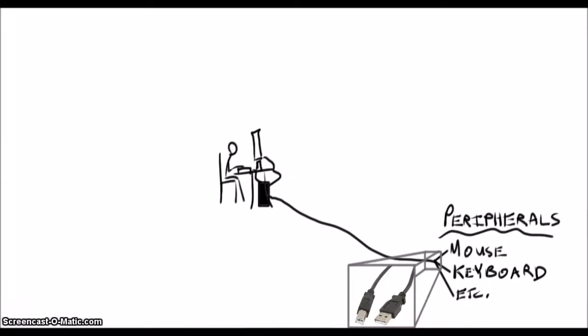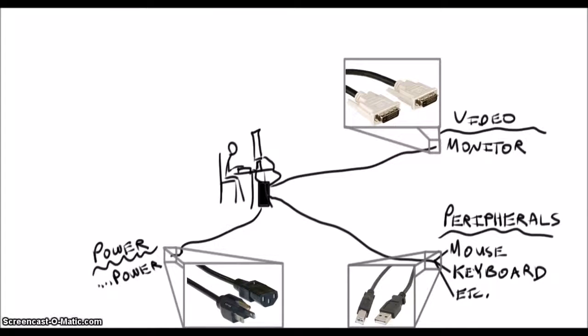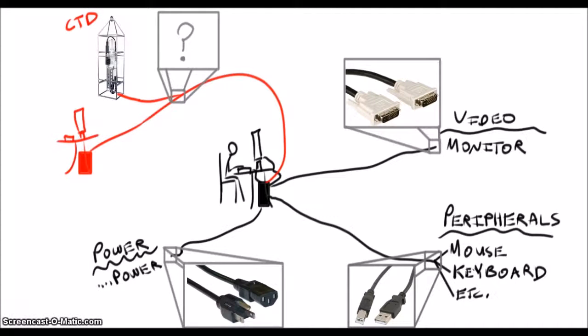When you look at the devices connected to your computer, you'll generally see things like USB for peripherals, DVI for video, and power cables for power. But what about when you connect computers to other computers or to devices like CTDs? In order for them to talk to each other, they need a common language or protocol as well as a system of plugs and pins and wires. That's where serial and Ethernet come in.